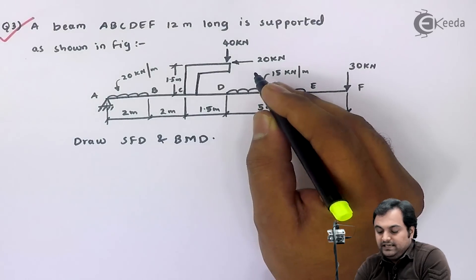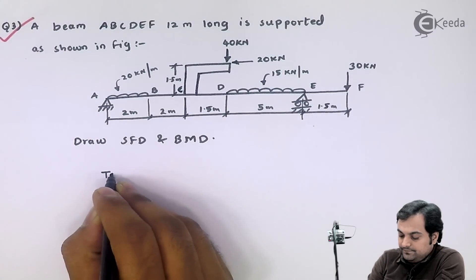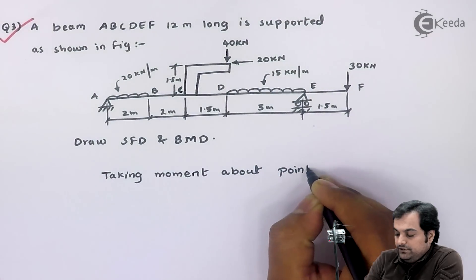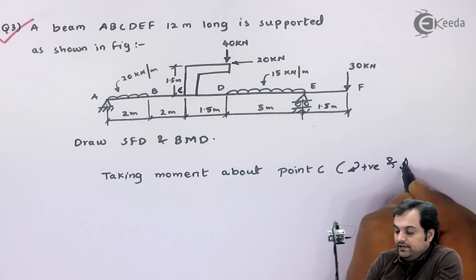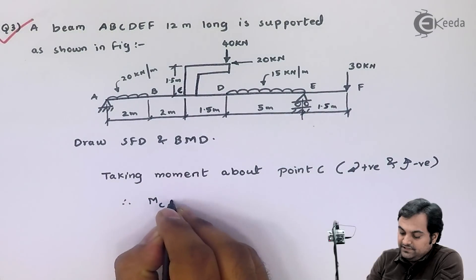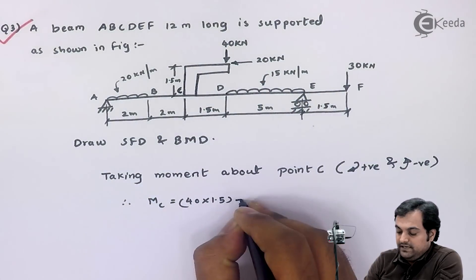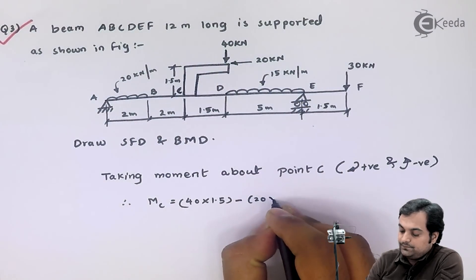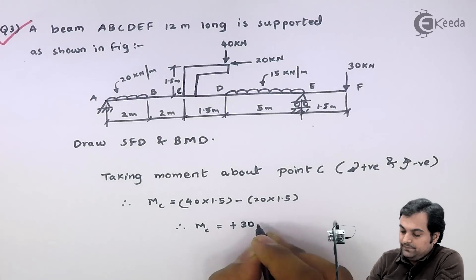Now how to convert that? For that I'll take the moment at point C. Taking moment about point C, my convention will be clockwise moment positive and anti-clockwise moment negative. Therefore, moment at C equals 40 times 1.5 clockwise, minus 20 times 1.5 for the anti-clockwise moment, and my answer is plus 30 kilonewton meter.